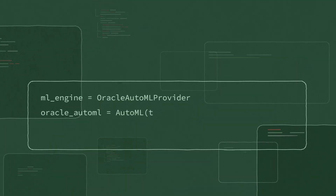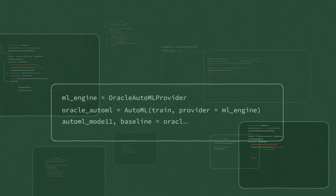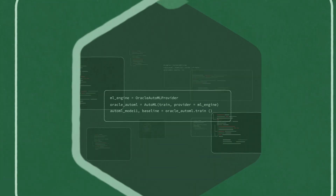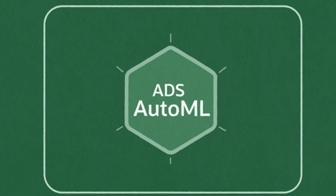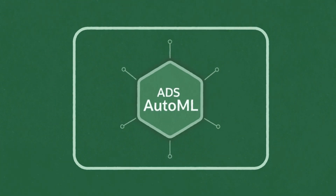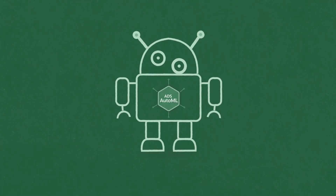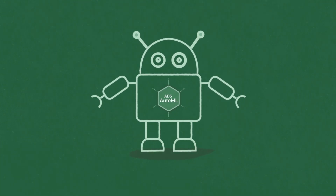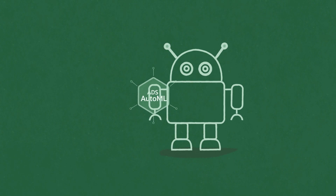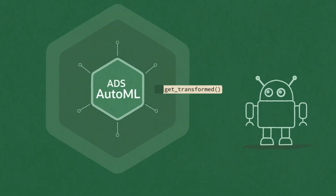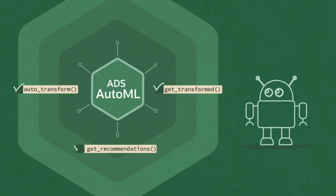With a simple line of code, you can automate model training through the ADS AutoML API. ADS can help you find the best data transformations for your datasets.